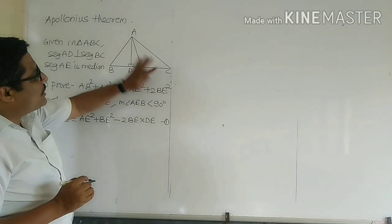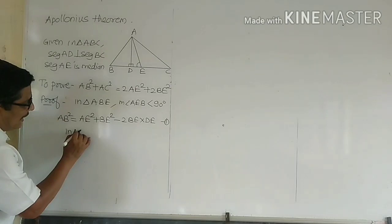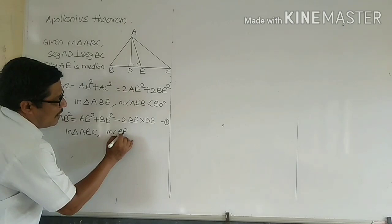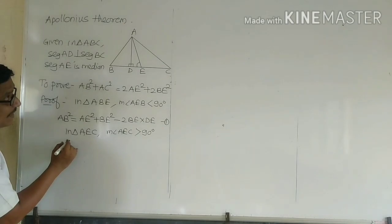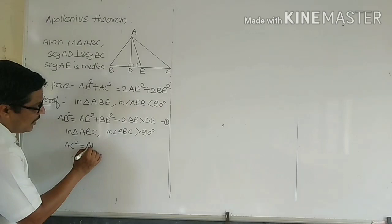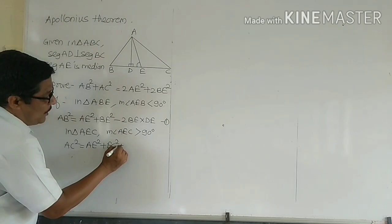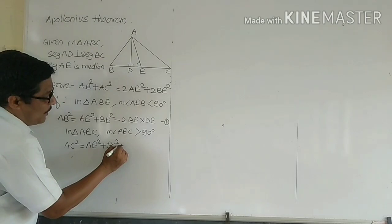In the same way, for the obtuse angle triangle, we use angle AEC. In triangle AEC, since angle AEC is greater than 90 degrees, we can write AC² = AE² + EC² + 2EC × ED. This is step number 2.